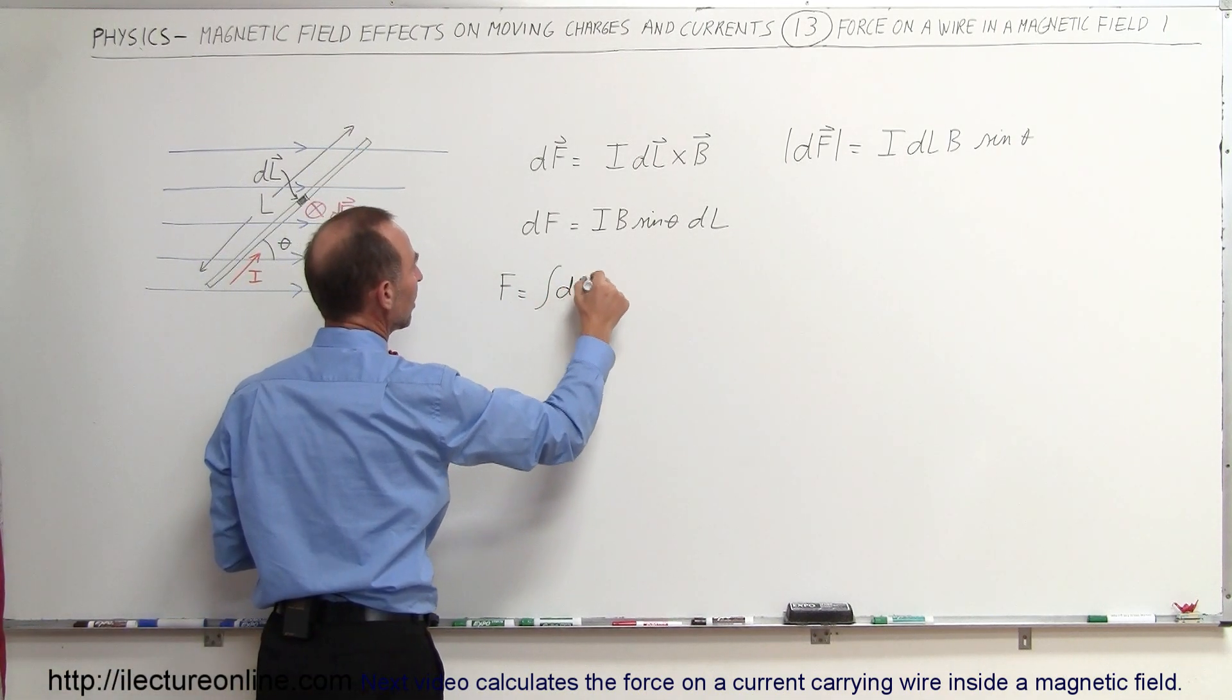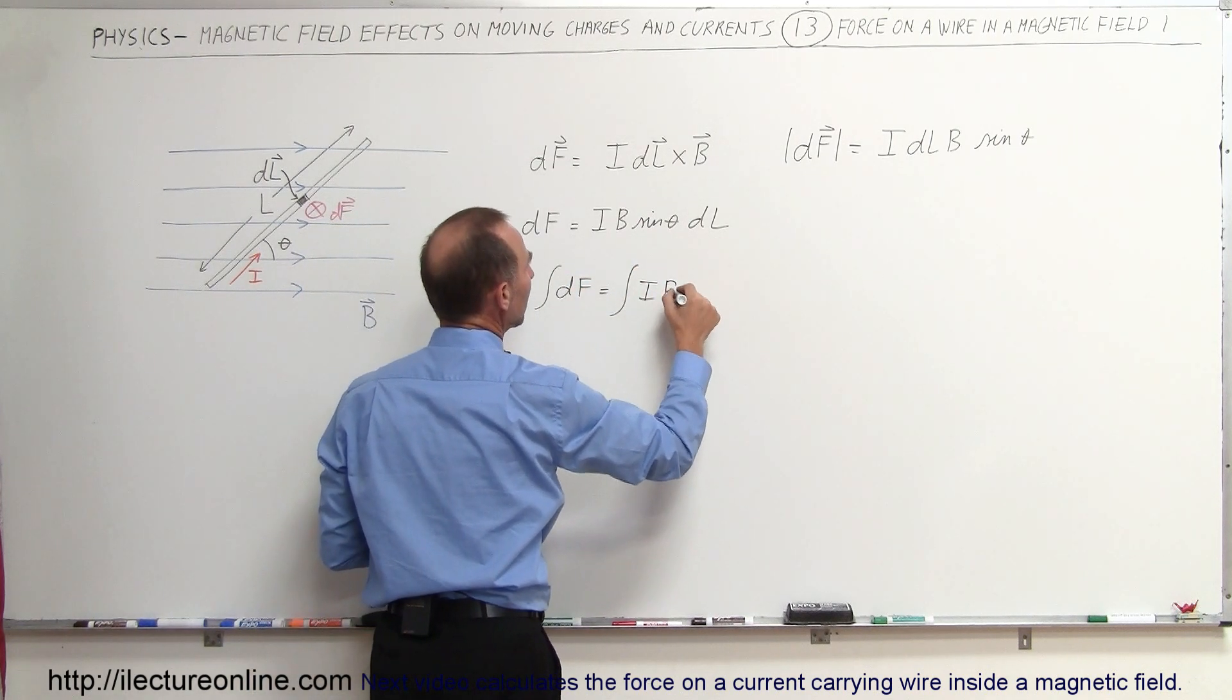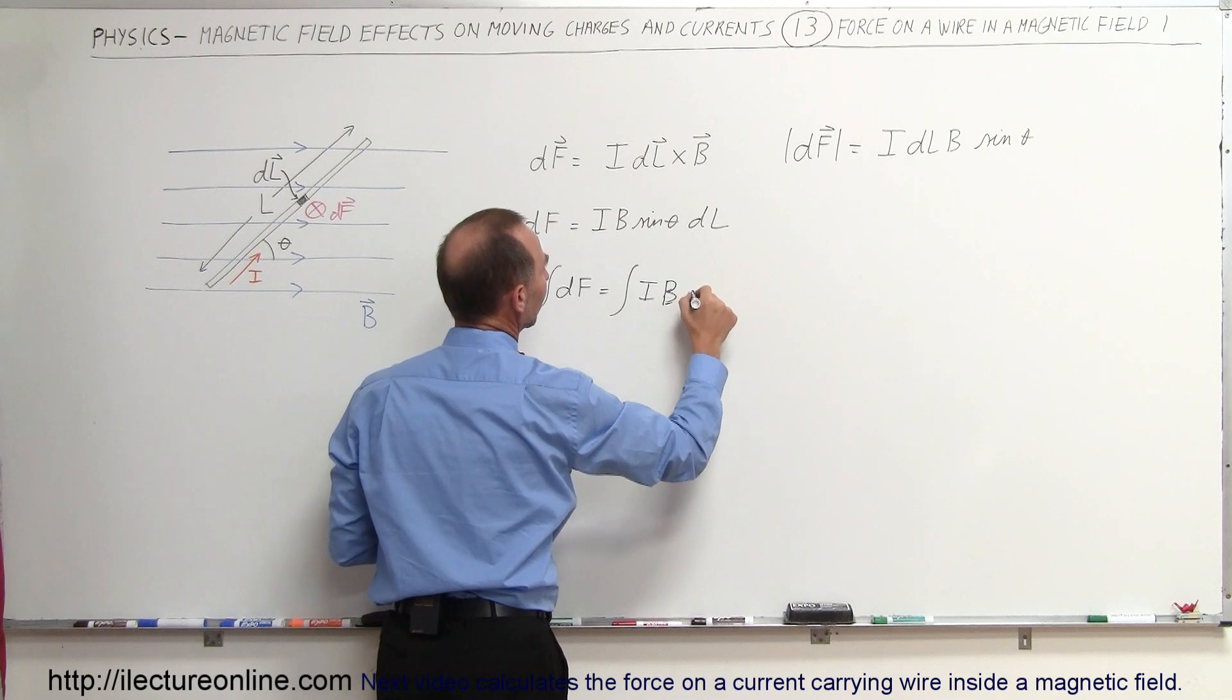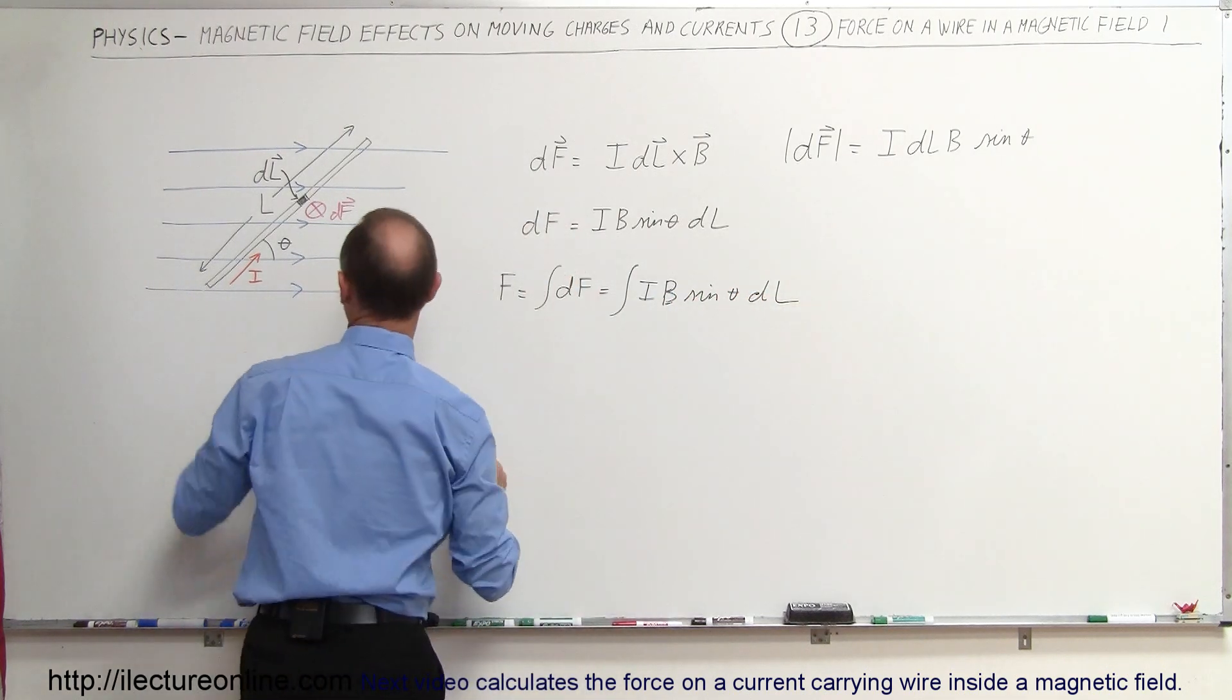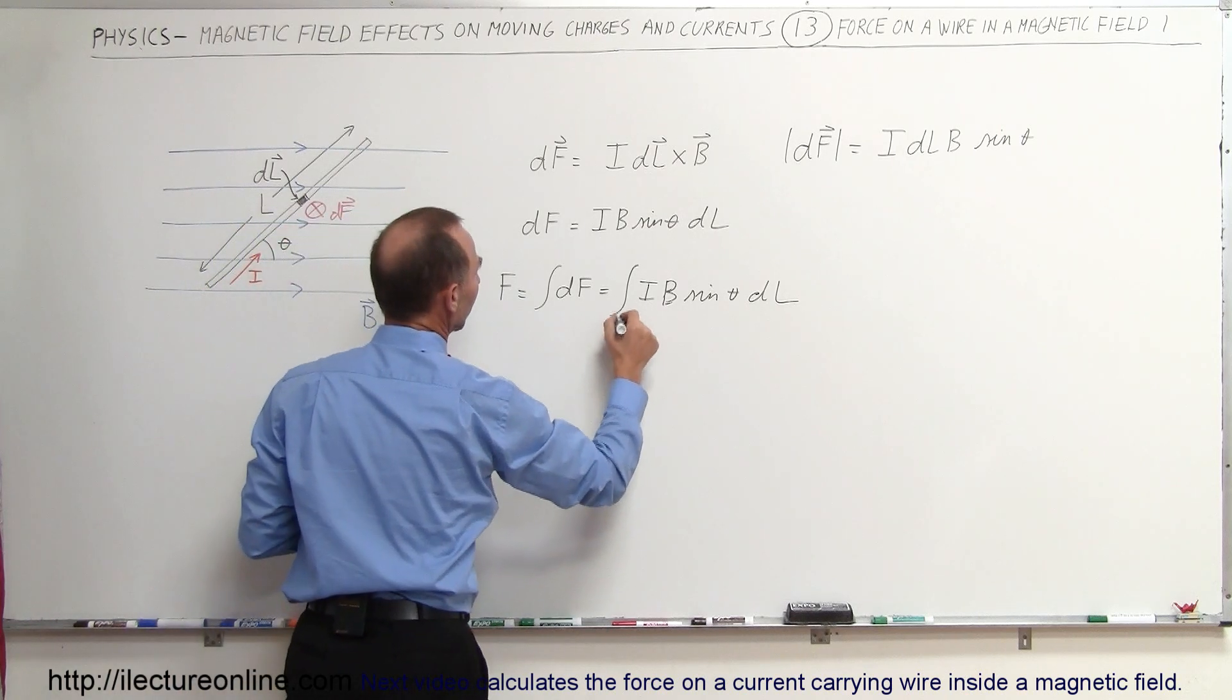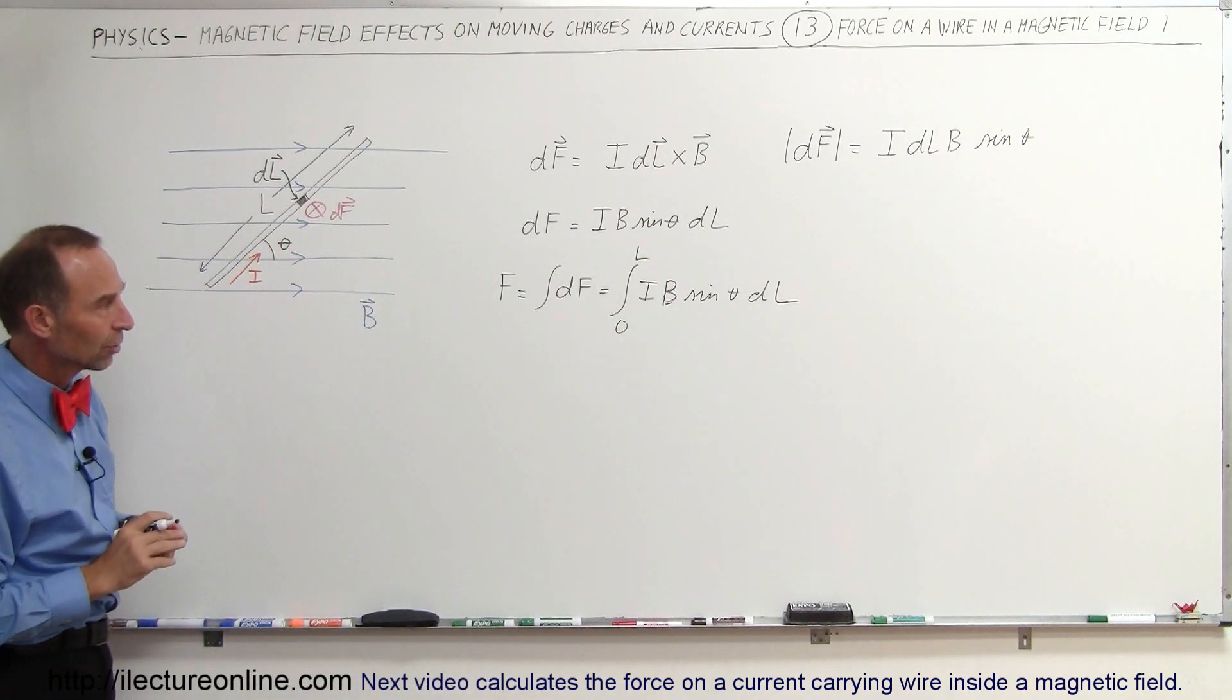So we can say that F is equal to the sum, which is the same as the integral of all the df's, which equals the integral of I times B times sine of theta times dl. And we're going to integrate from one end to the other, so from zero to the length L of that current segment.